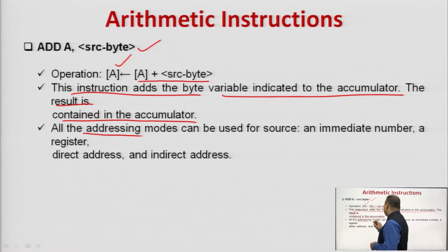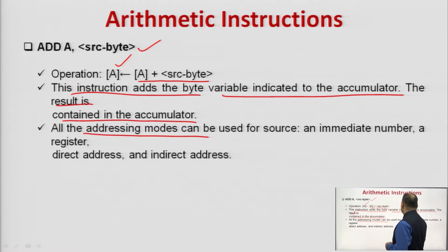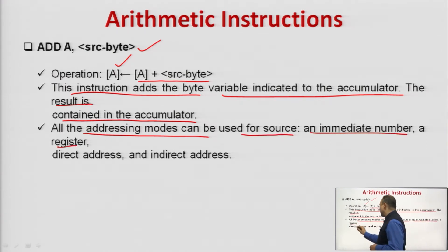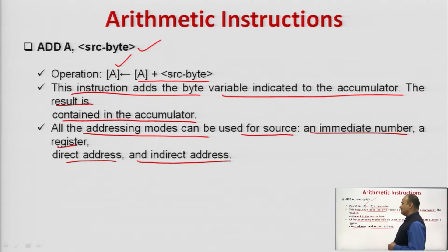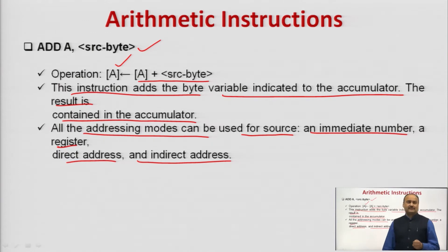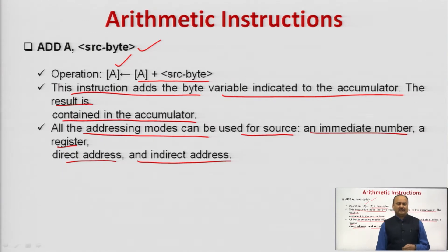All addressing modes can be used for the source: immediate number, register, direct address, and indirect address. This is the first instruction of the arithmetic group — ADD A, source byte.